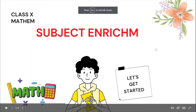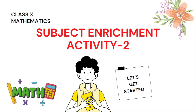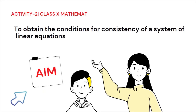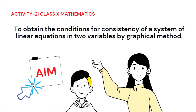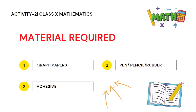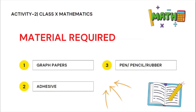Hello students. Today in this video we will discuss the Subject Enrichment Activity 2 for Class 10 Mathematics. The objective of this activity is to obtain the conditions for consistency of a system of linear equations in two variables by graphical method. The material required for this activity are graph papers to plot the graphs, adhesive for pasting the graph, and some stationery items like pen, pencil, and rubber.